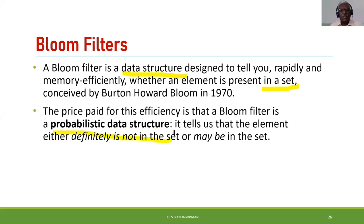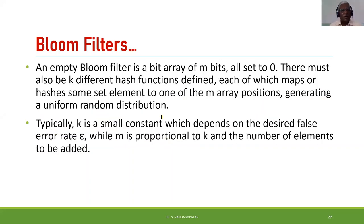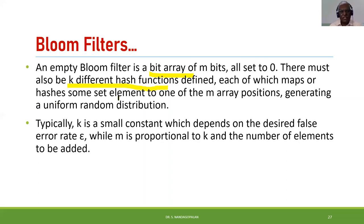A Bloom filter is a probabilistic data structure — 99% of the time we get the advantage of efficient and fast retrieval. How does it work? An empty Bloom filter is a bit array — a Boolean array of m bits, initially all set to zero. There must also be k different hash functions. This is an application of arrays again.